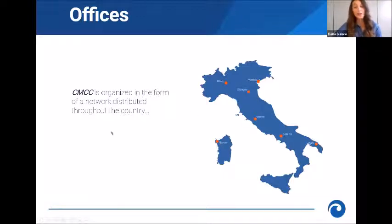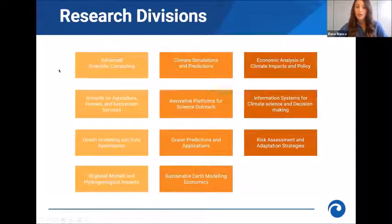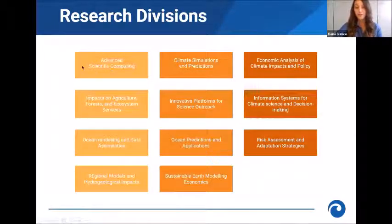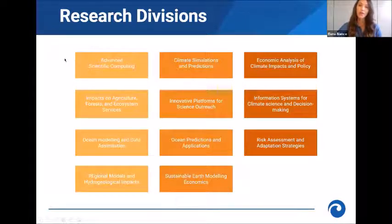In addition to this internal network, the center benefits from collaborations with institutional partners including the University of Bologna, the University of Venice, and other research centers. Each location hosts one or more research divisions. In total, CMCC has 11 research divisions sharing different knowledge and skills on climate science and climate change. More information is available on the CMCC website.